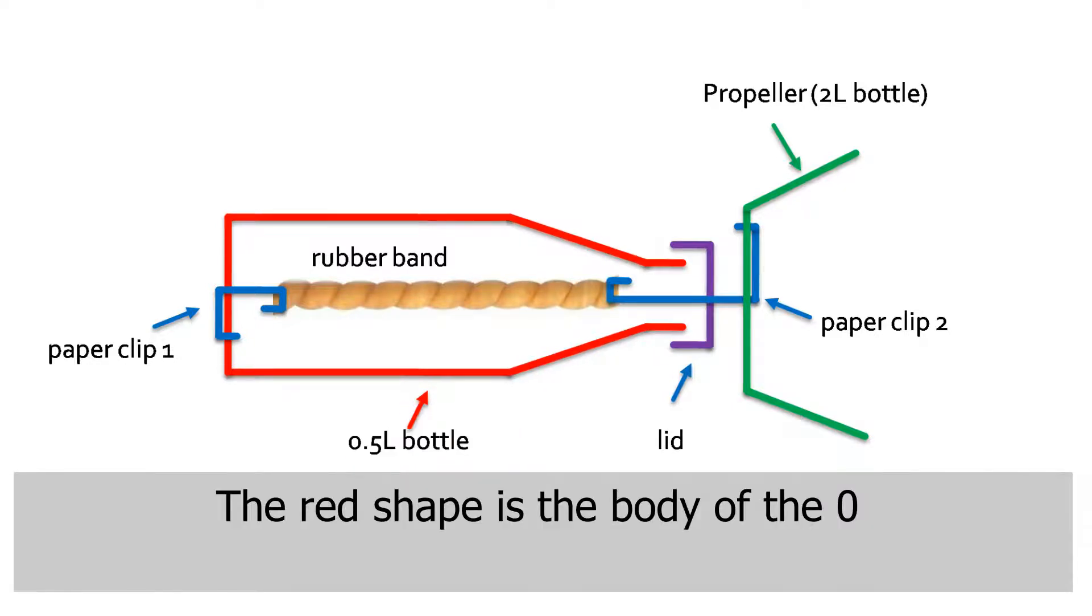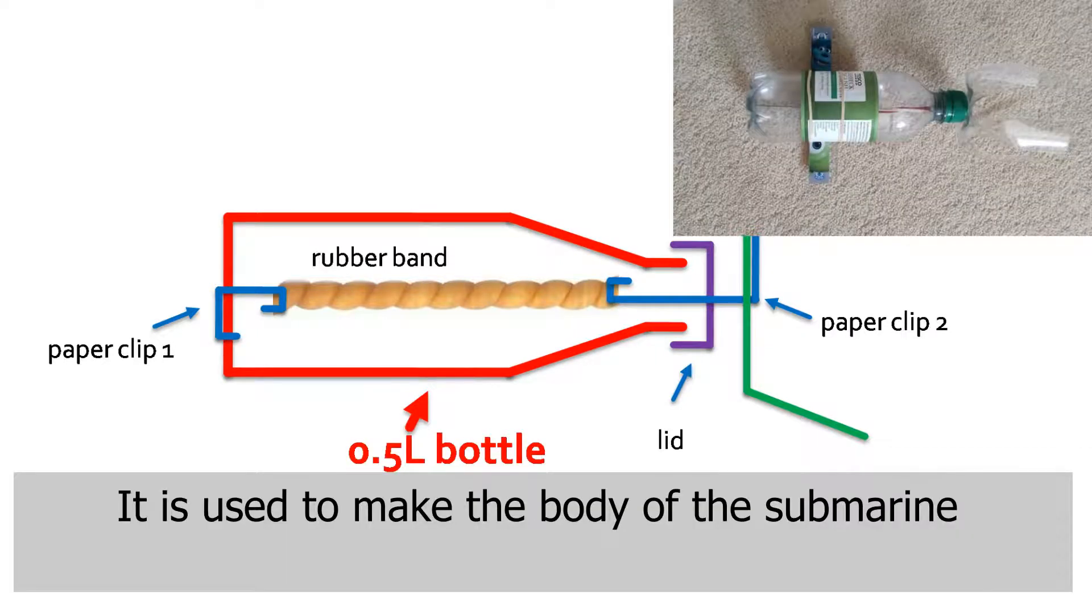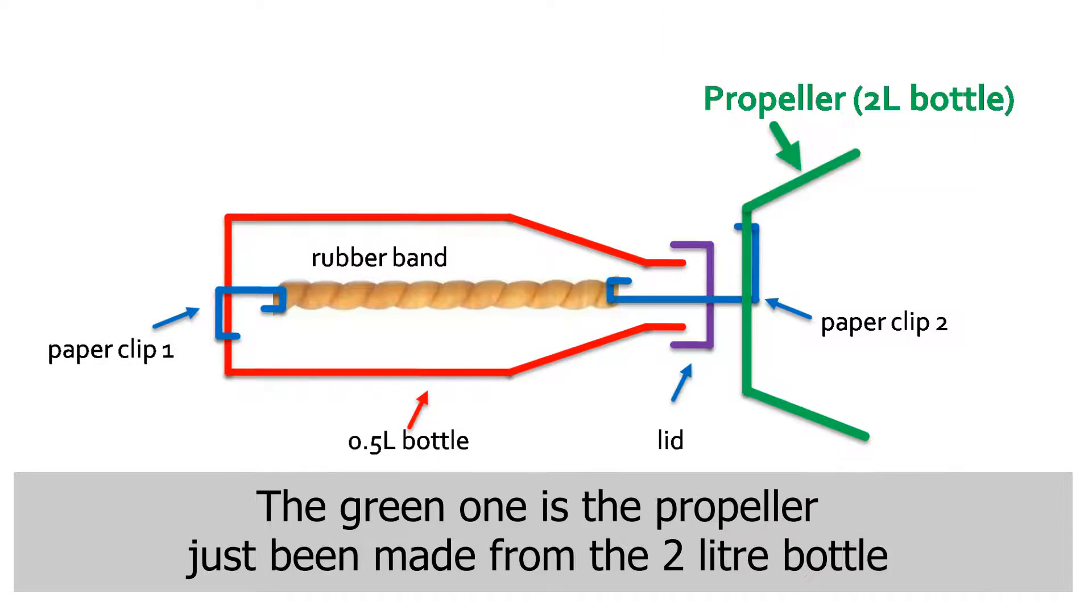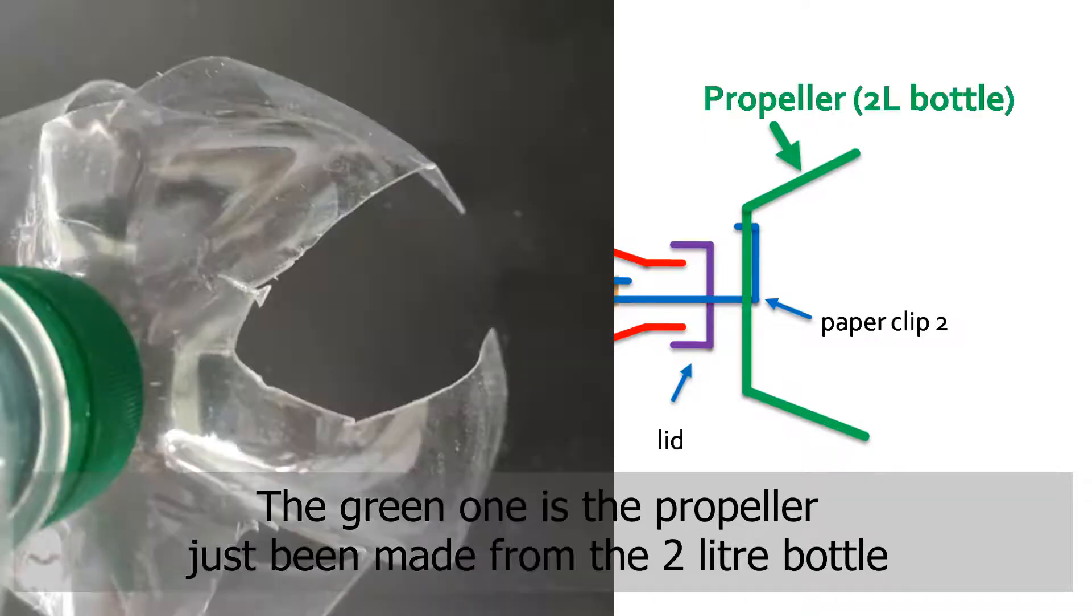The red shape is the body of the 0.5-liter bottle. It is used to make the body of the submarine. The green one is the propeller just made from the two-liter bottle.